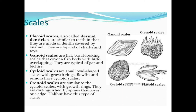Ctenoid scales are similar to cycloid scales with growth rings. They are distinguished by spines that cover one edge. Spines are pointed structures which are present on the scales.